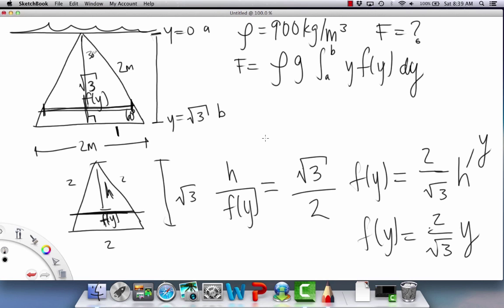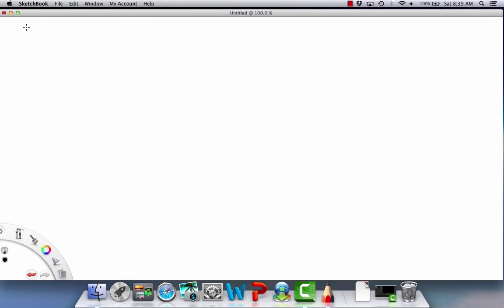Now we have everything to plug into our force, our fluid force formula. Our fluid force is going to be equal to our mass density, which is 900 kilograms per meters cubed, times the gravity constant 9.8 meters per second squared. And then we have from a to b, which is going to be 0 to radical 3.